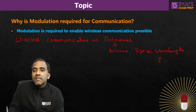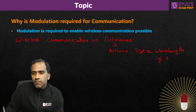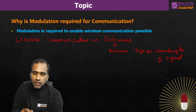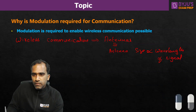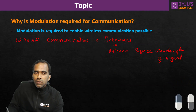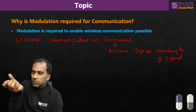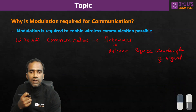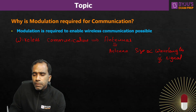Wavelength of what? Whatever signal we want to transmit. Antenna size is always proportional to the wavelength of the signal we want to communicate using the antenna. Don't think that any antenna can transmit any signal — that is not possible. For a certain signal with certain frequency or wavelength, we need an antenna of a certain size.